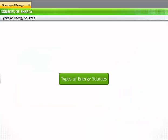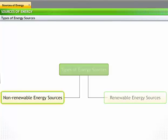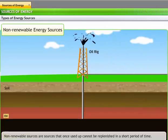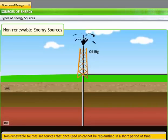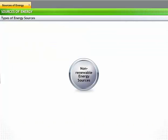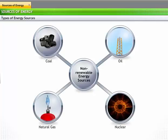All sources of energy can be divided into two categories. Non-renewable sources are sources that once used up cannot be replenished in a short period of time. Fossil fuels such as coal, oil, natural gas and nuclear fuels are non-renewable sources of energy.